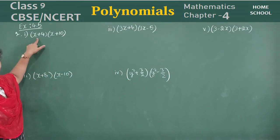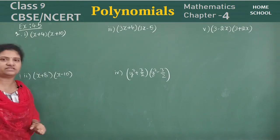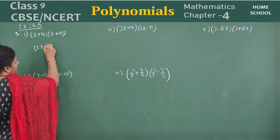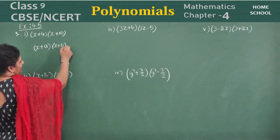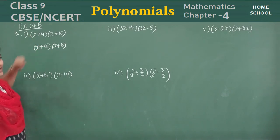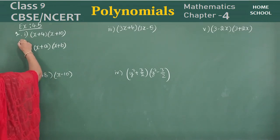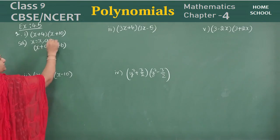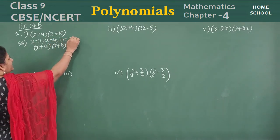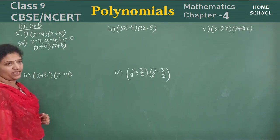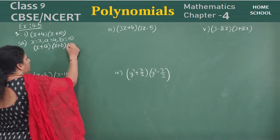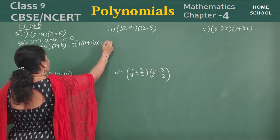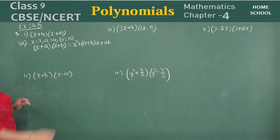Children, look here. First question: x plus 4 into x plus 10. Which identity can you remember? Yes, that is x plus a into x plus b. Now compare and write the x value and a value. So the solution: x is equal to x, a is equal to 4, and b value is 10. The identity is: x plus a into x plus b is equal to x squared plus of a plus b into x plus ab.